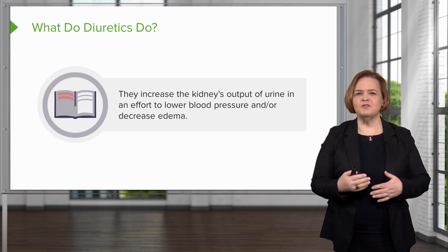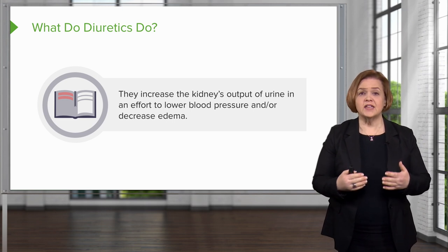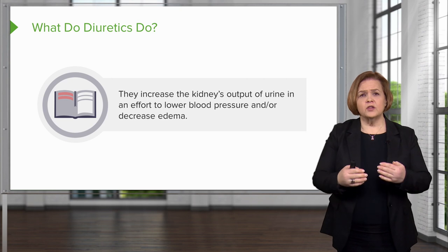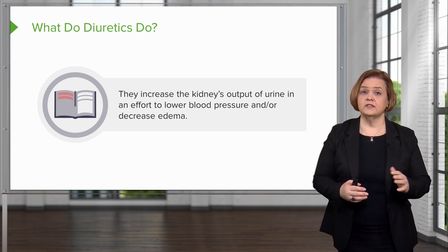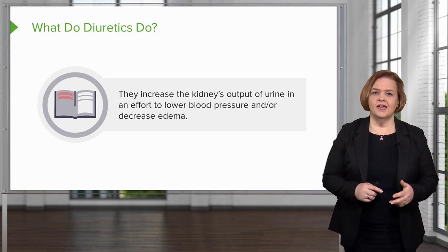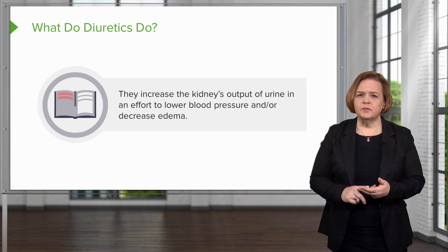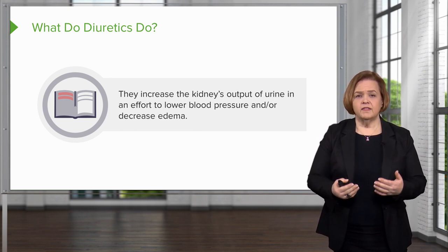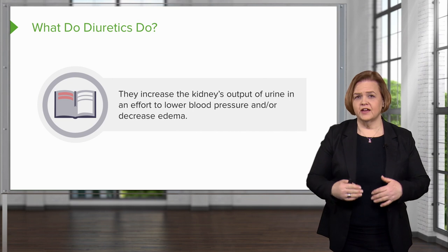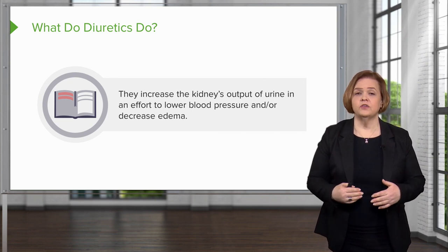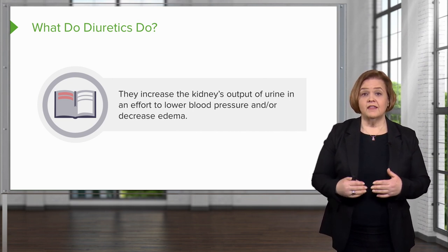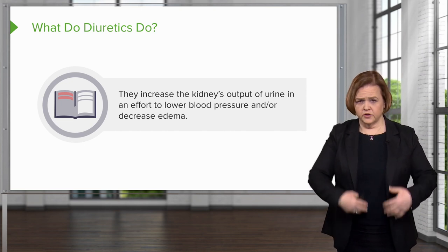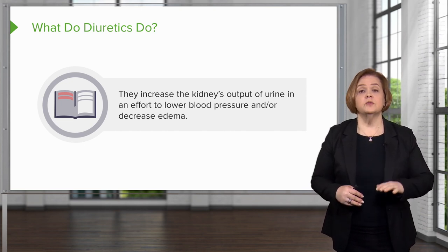Let's quickly review what diuretics do. They increase the kidney's output of urine because we're trying to lower blood pressure or decrease edema. If a patient has high blood pressure, we give them a diuretic, they put off that extra fluid, and they'll have less volume in their intravascular space — meaning lower blood pressure.